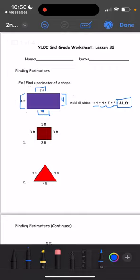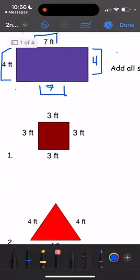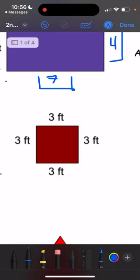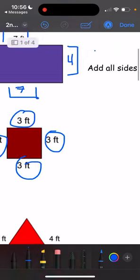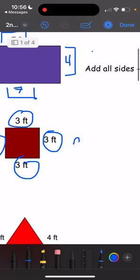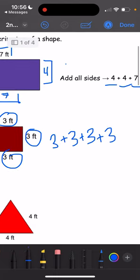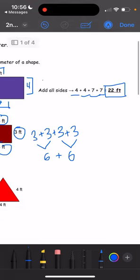Alright, let's try number 1. This one, we have all of the sides. All of the sides are 3 feet. So just like the example, we're going to add all of the sides together. We have 3 plus 3 plus 3 plus 3. What is 3 plus 3? 3 plus 3 is 6. And these two, 3 plus 3, is also 6. So 6 plus 6 equals 12. So the answer is 12 feet.